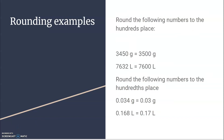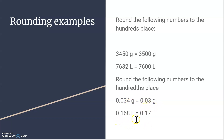Here are a few more examples. Round the following numbers to the hundreds place. For 3465: the hundreds place is at the four, and the number after it is five, so we round up to 3500 grams. For 7630: the hundreds place is at the six, and the number after it is three — less than five — so we round down to 7600 liters. For decimals: 0.034 rounded to the hundredths place gives 0.03 grams. And 0.168 rounded to the hundredths place — the eight after the six is greater than five — so it becomes 0.17 liters.